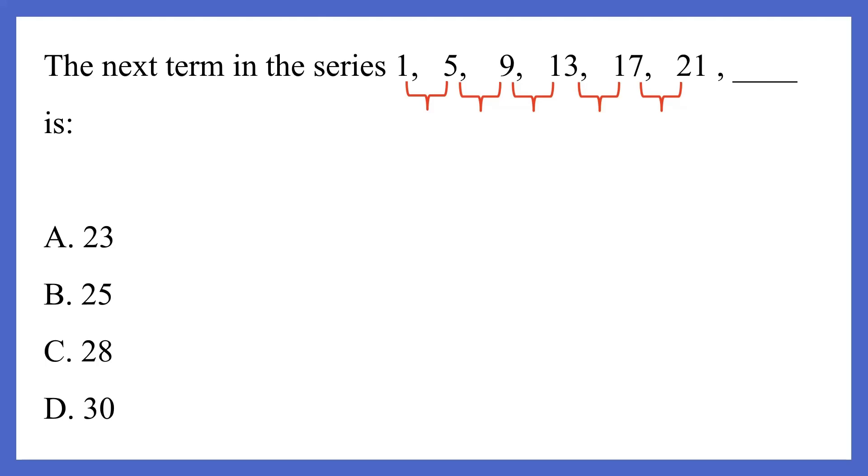So let's look at the first question. They've given us a series of numbers 1, 5, 9, 13, 17, and 21, and they've asked us to find the next term in the series. The way to solve these types of questions is by finding a pattern between the numbers. The best way to do this is by taking the difference between the consecutive numbers.